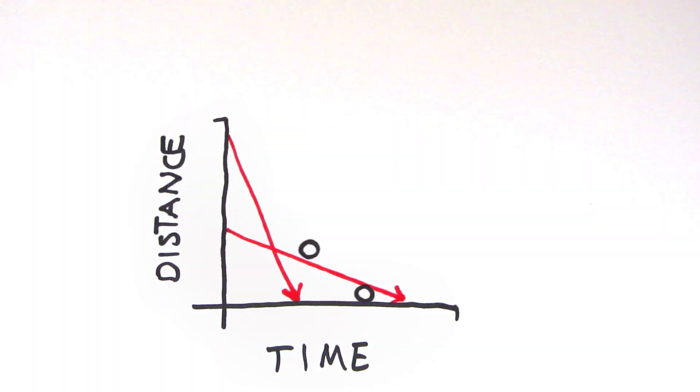You can use the steepness of the slopes to work out your speed. If the line is very steep, then you're moving very fast. But if you're moving slowly, then the graph will have a gentler slope.